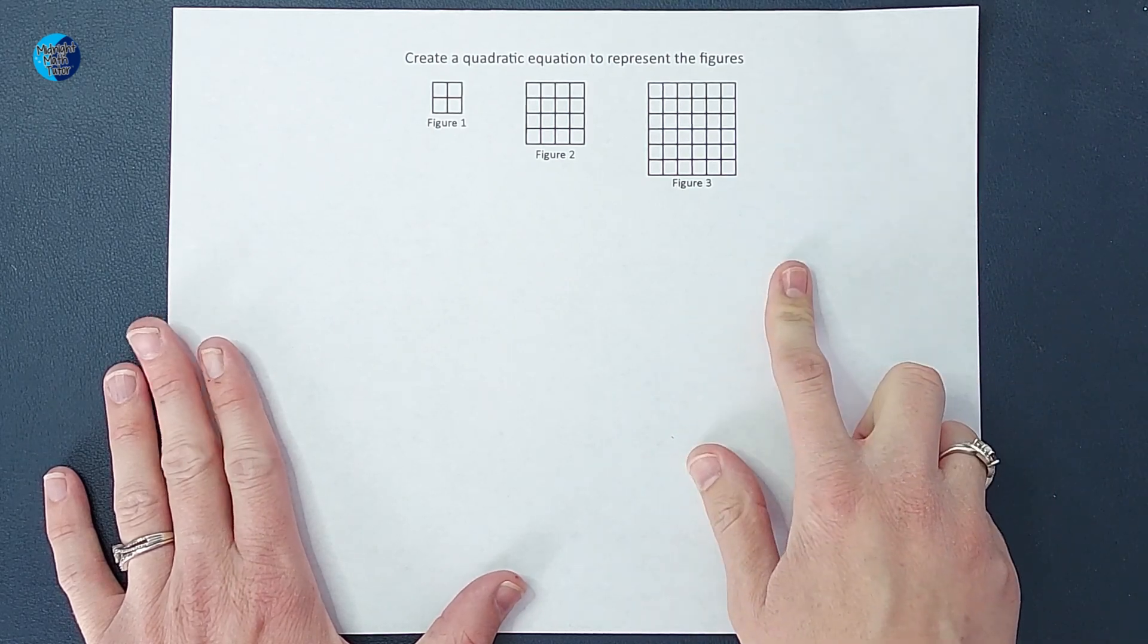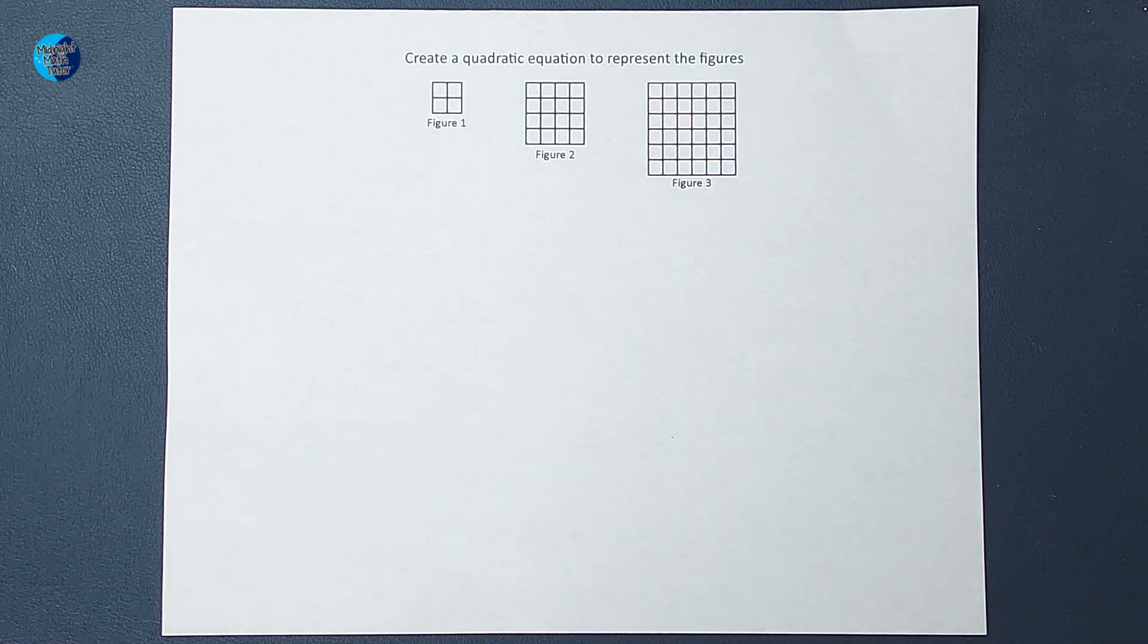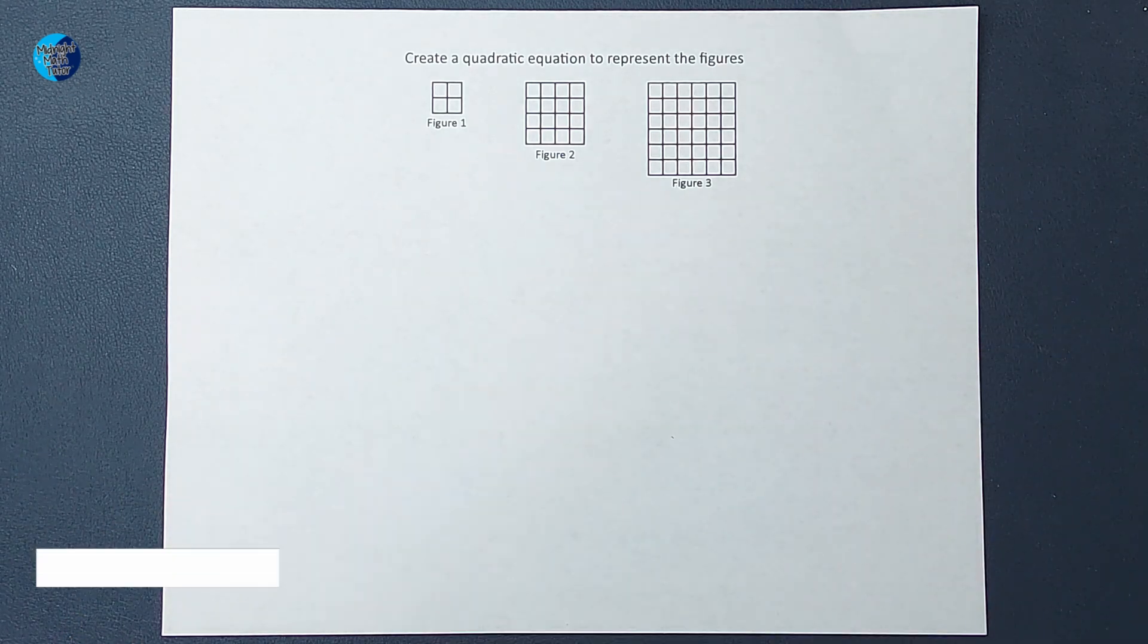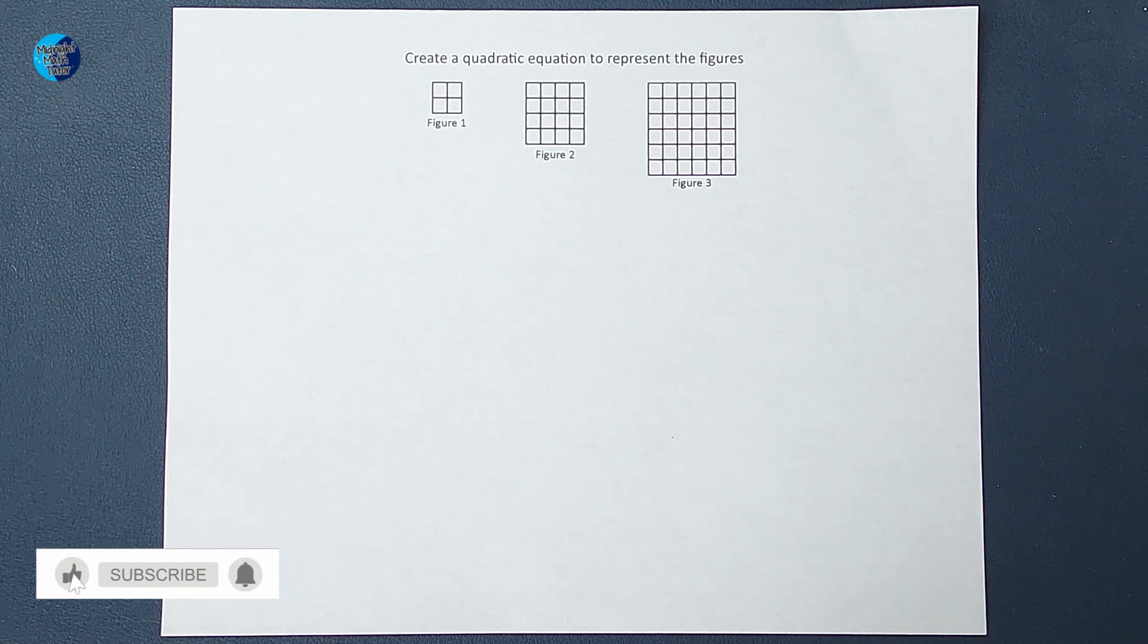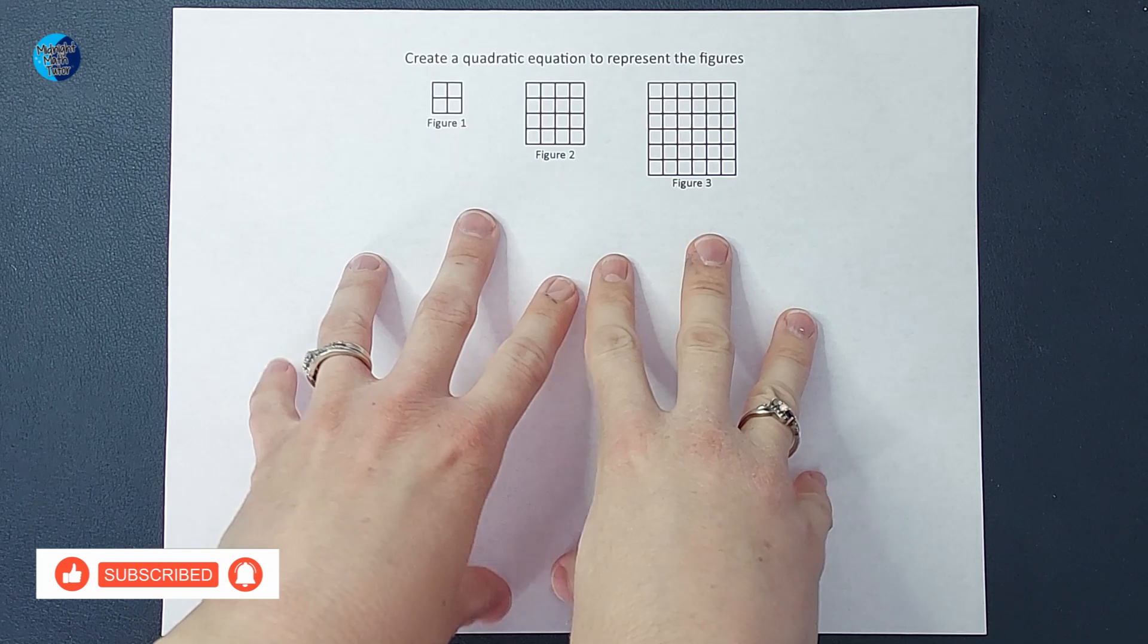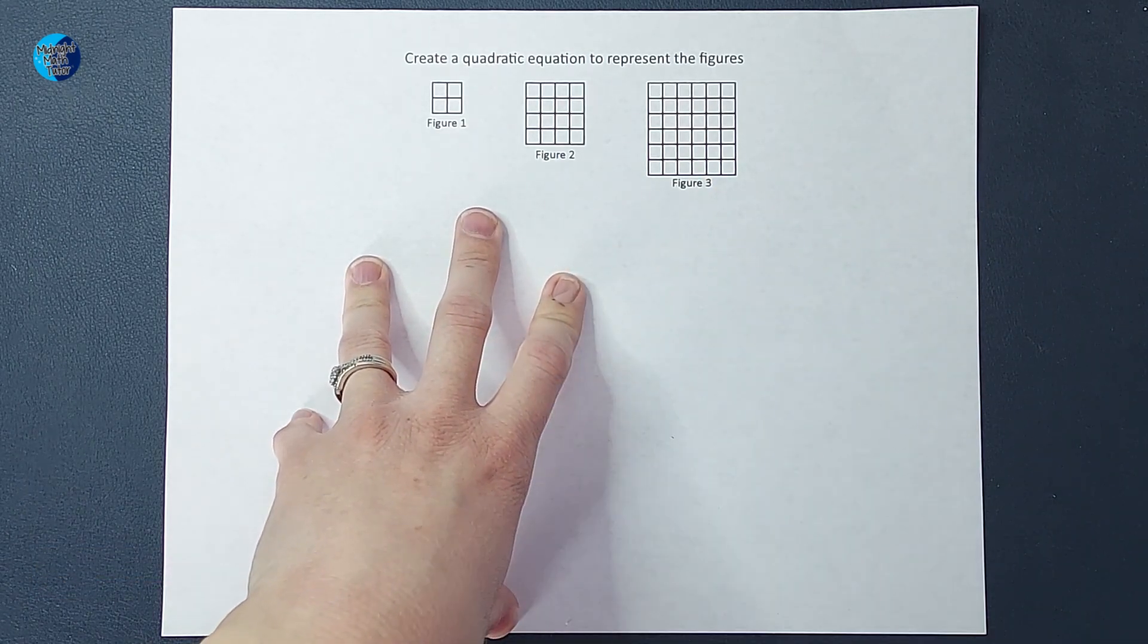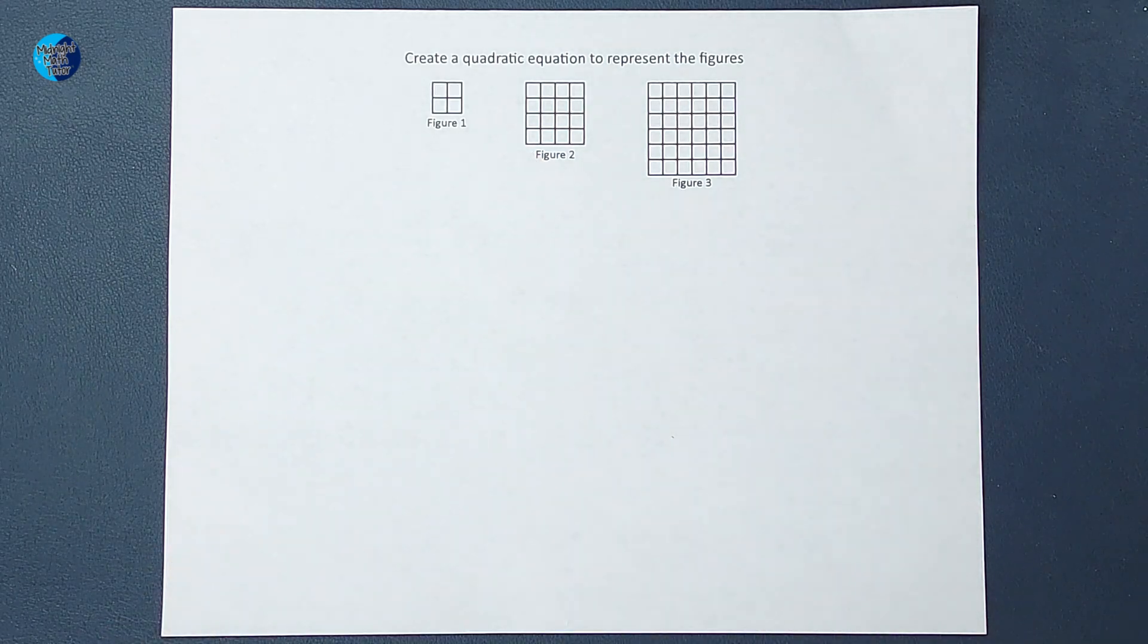But the purpose of having an equation for this is so I could be like, what's figure 273 gonna look like? That's what I want the equation for. I don't want to have to draw 273 of these, I don't have time for that, so I want to be able to find an equation.